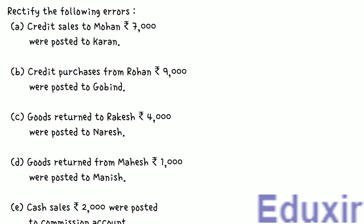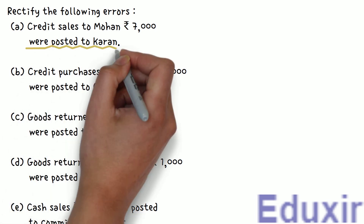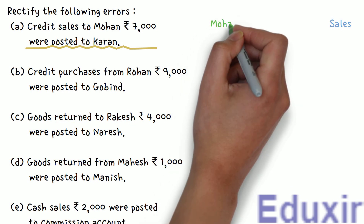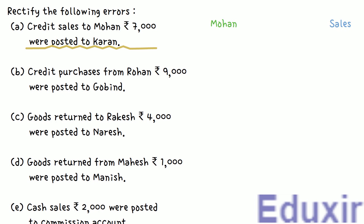Let us start with the analysis of the first error. In this case, Rs. 7,000 of credit sales done to Mohan are posted to Karan's account. As per the original transaction, there were Rs. 7,000 of credit sales to Mohan — so we need to credit the sales account. At the same time, as this sale is done on credit to Mohan, Mohan becomes the debtor of the business and hence Mohan's account should be debited. As this entry is wrongly posted to Karan's account instead of Mohan's account, as per the second guiding principle, we assume that Karan's account is posted with the correct amount — Rs. 7,000 — and on the correct side, which is the debit side.